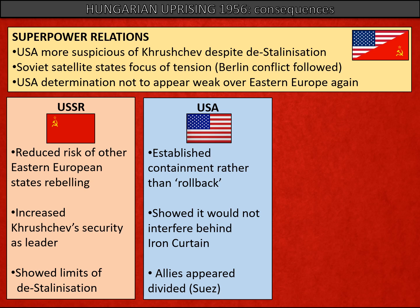For the USA, this really underlined the policy of containment — that they would put up with communism in certain places in the world and wouldn't attempt to roll it back where it had already been established. The USA had also shown what the limits of its influence would be: they wouldn't interfere behind the Iron Curtain. And the USA had looked quite weak, with no assistance given to the rebels — partly because its allies were distracted by the Suez conflict, with Britain and France involved in Egypt, which had diverted the Western world's attention while events in Hungary took place.